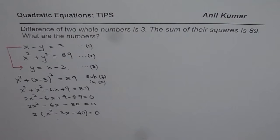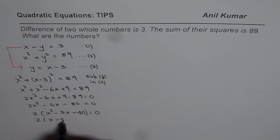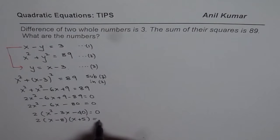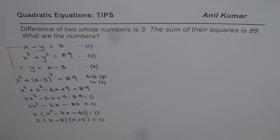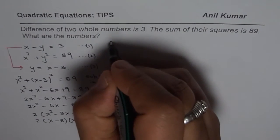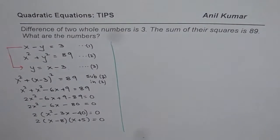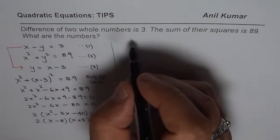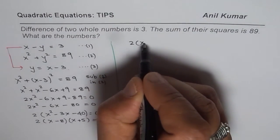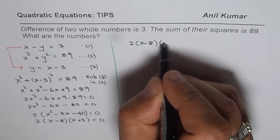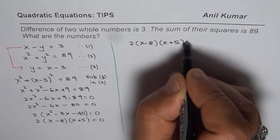Now we are looking for two numbers whose product is minus 40 and sum is minus 3. Well, 8 and 5 can work for us. So we have 8 should be negative and 5 positive. So these are the numbers which can work for us. Now let us look into this equation from where we get our solution.